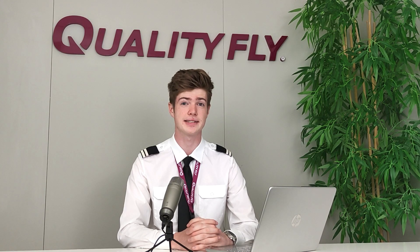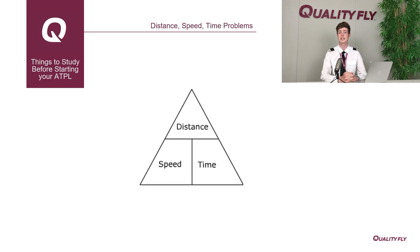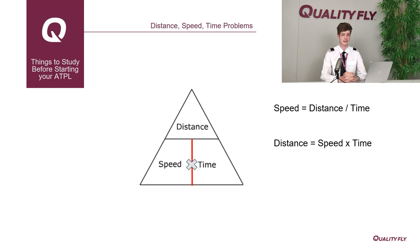Pilots must also be able to work out speed, distance, and time problems. We need to be able to take two of these values and use them to produce a third. Using this triangle, we can generate three formulae: speed equals distance divided by time, distance equals speed multiplied by time, and time equals distance divided by speed. Let's try using one of these formulas.